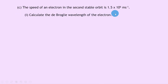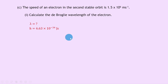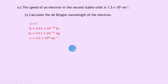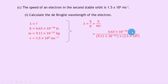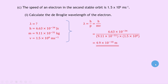Part c says the speed of an electron in the second stable orbit is 1.5 times 10 to the 6 meters per second. Part one: calculate the de Broglie wavelength. We know h is 6.63 times 10 to the minus 34 joule seconds, mass is 9.11 times 10 to the minus 31 kilograms, and v is 1.5 times 10 to the 6 meters per second. Lambda equals h over mv gives 6.63 times 10 to the minus 34 divided by 9.11 times 10 to the minus 31 times 1.5 times 10 to the 6, giving 4.9 times 10 to the minus 10 meters.